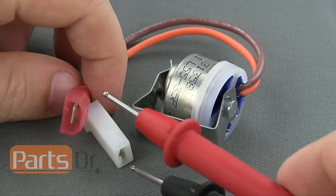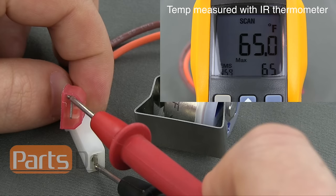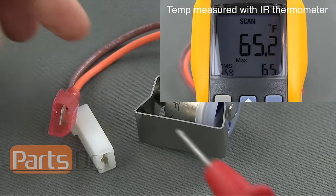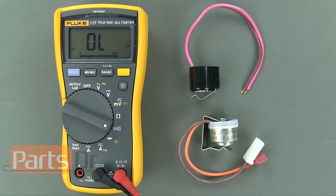While the thermostat is warmer than the opening temperature, the thermostat should not have continuity and the meter will not make any noise. In this case, this thermostat should not have continuity if it is 55 degrees Fahrenheit or warmer.